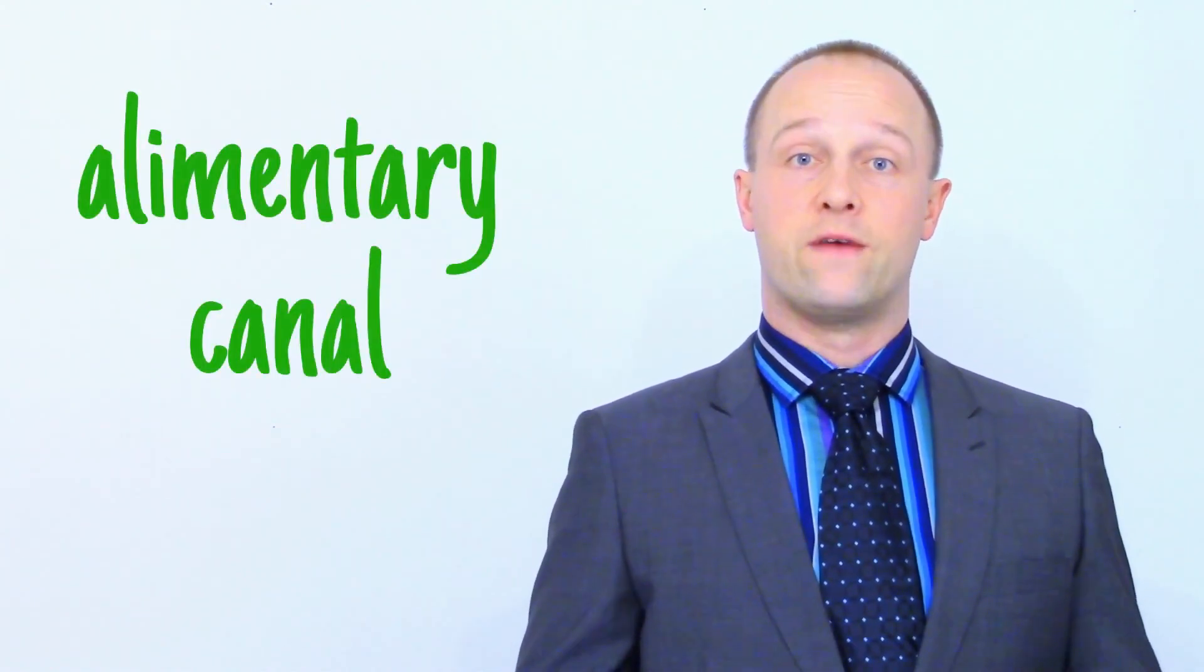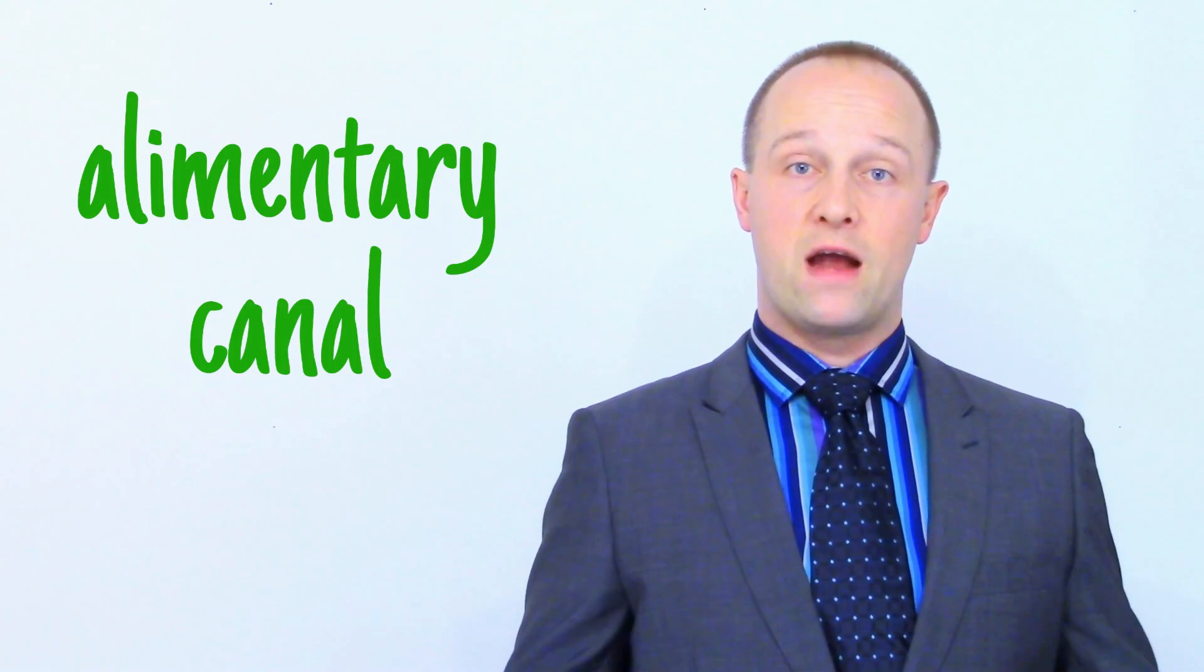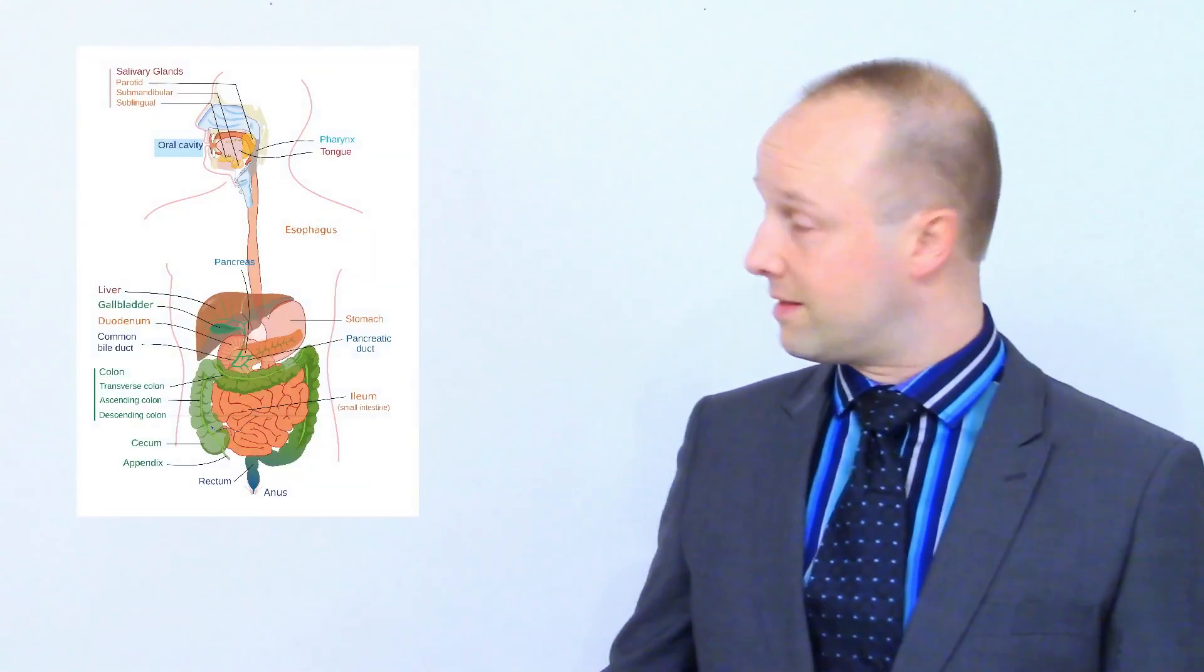The digestive system is an organ system - that is, a group of organs all working together to achieve a particular goal. In this case, digestion of nutrients from food and the excretion of waste. It's essentially a long tube, known as the alimentary canal, running from the mouth to the anus with various organs along the way. You need to be familiar with the basic functions of each organ, and if you're studying iGCSE, you may also need to be able to put them in order or identify them on a diagram like this one.